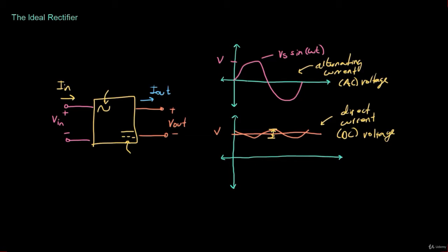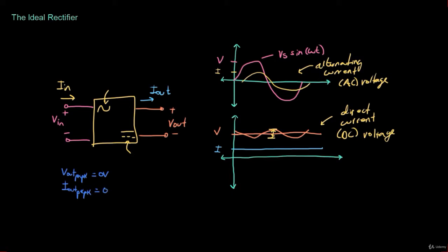We can say the same for the current. If we have a sinusoidal input current slightly delayed from the input voltage with a peak magnitude of I, we would want the output current to also be a flat DC current with a peak magnitude of I. So the characteristics of an ideal rectifier are: Vout peak-to-peak (the output voltage ripple) is zero volts; Iout peak-to-peak (the output current ripple) is zero amps; and the input power is equal to the output power — in other words, there is no power loss in the rectifier circuit itself.